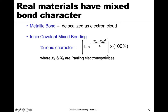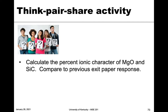Here is the equation that formulates percent ionic character: it's one minus an exponential, where inside the exponential it's negative, and then X_A and X_B are the two electronegativities for the compound — for example, sodium and chloride in sodium chloride. That difference is divided by four, squared, and then we multiply everything by 100% to get a percent. This gives us a measure of the mixed bond character.